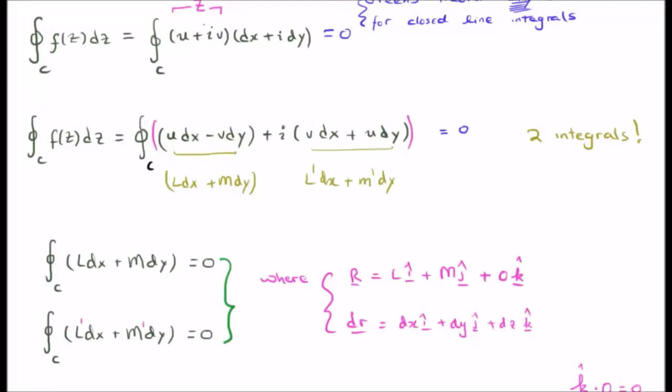So each of these must be equal to zero separately. We know of course that r is equal to l i hat plus m j hat plus zero k hat. This is something we saw in video number 2 where we say r is the more general vector field having both an i and j hat component.